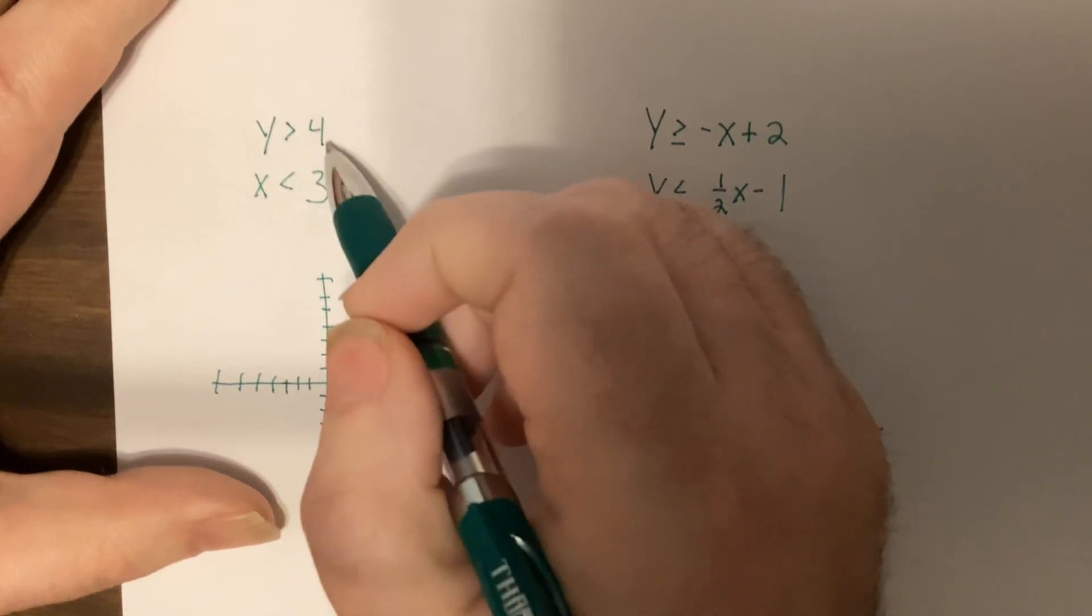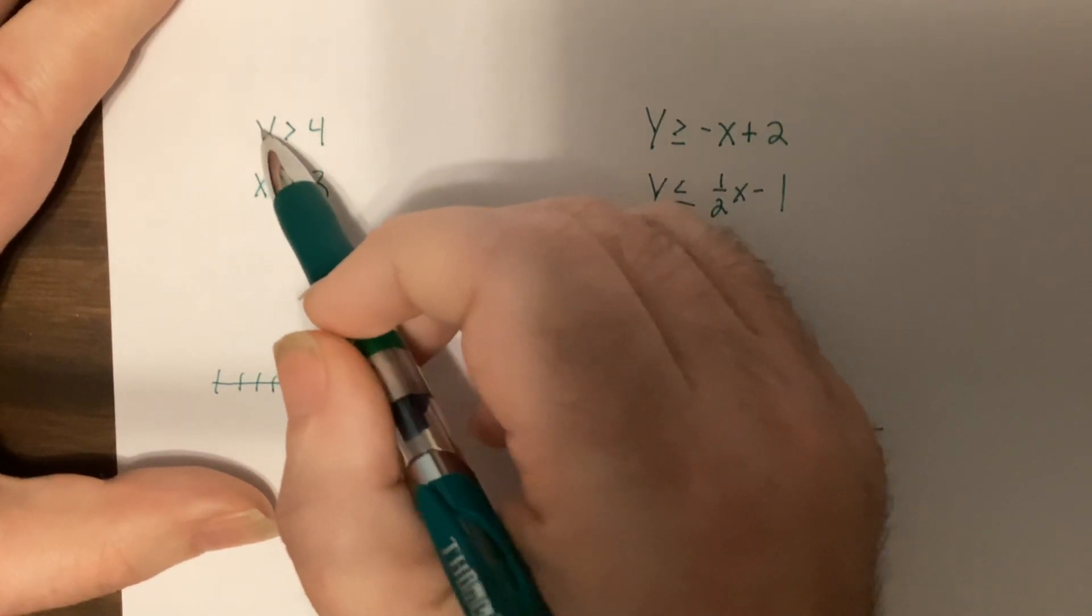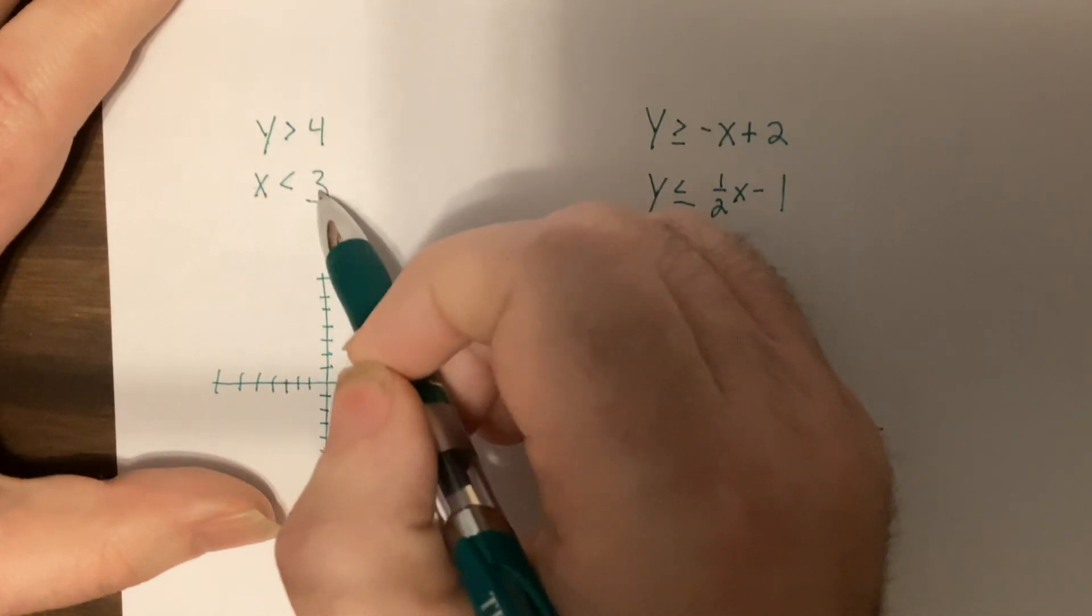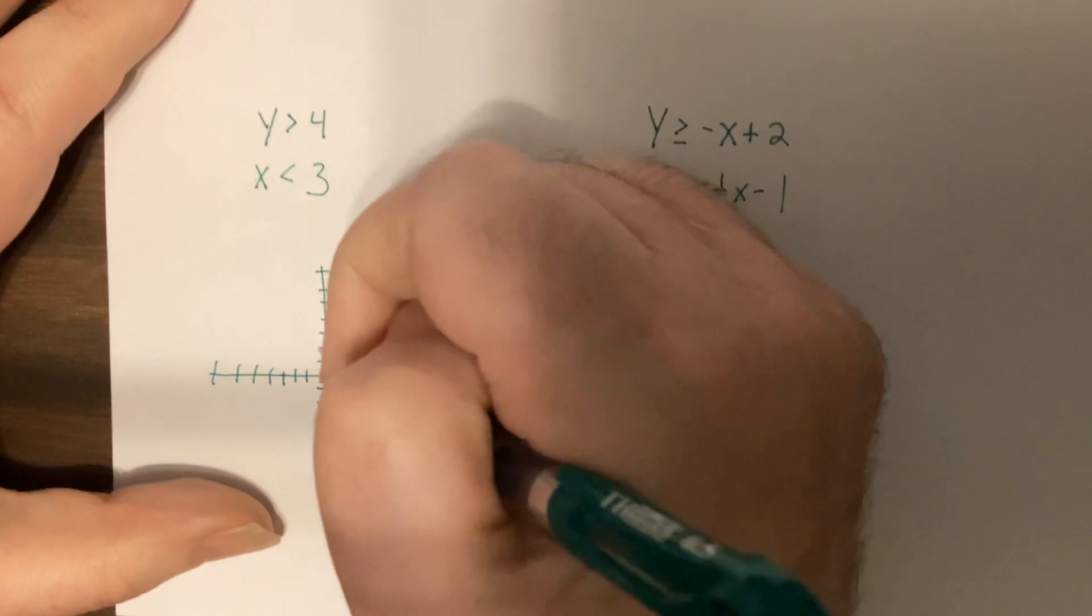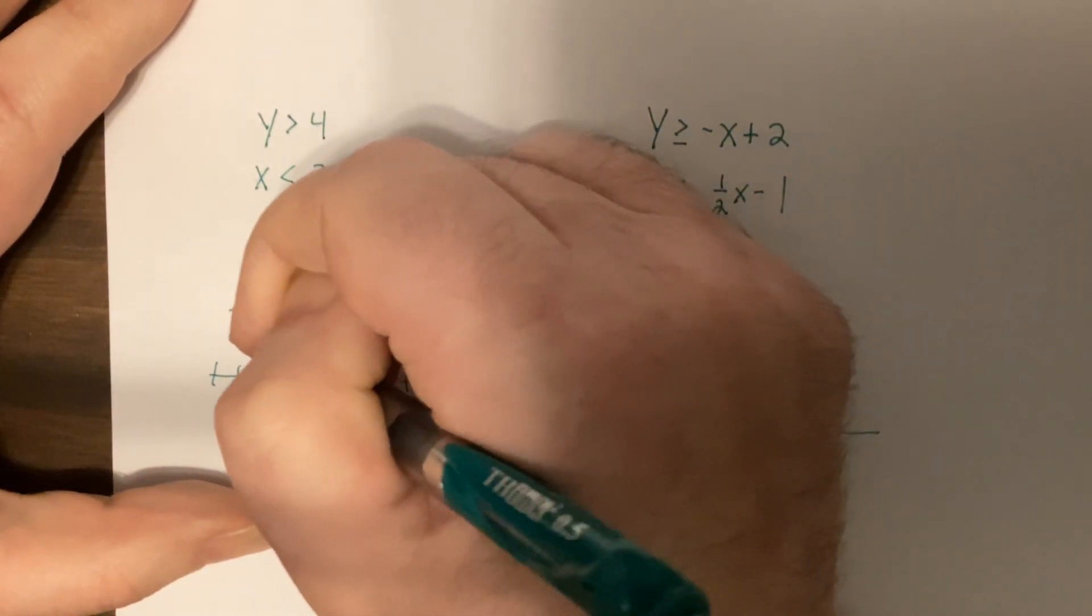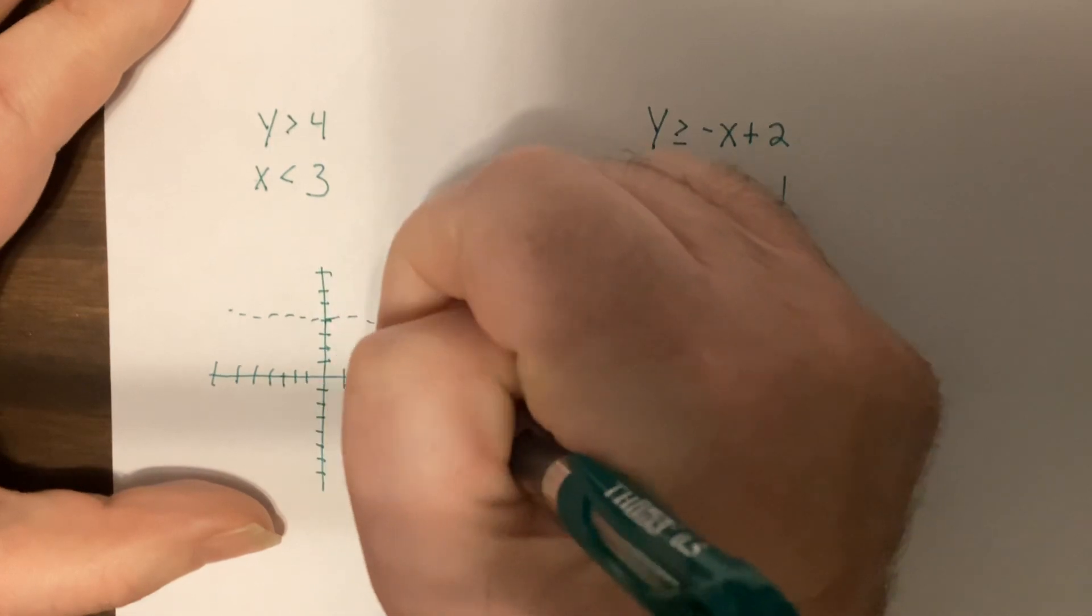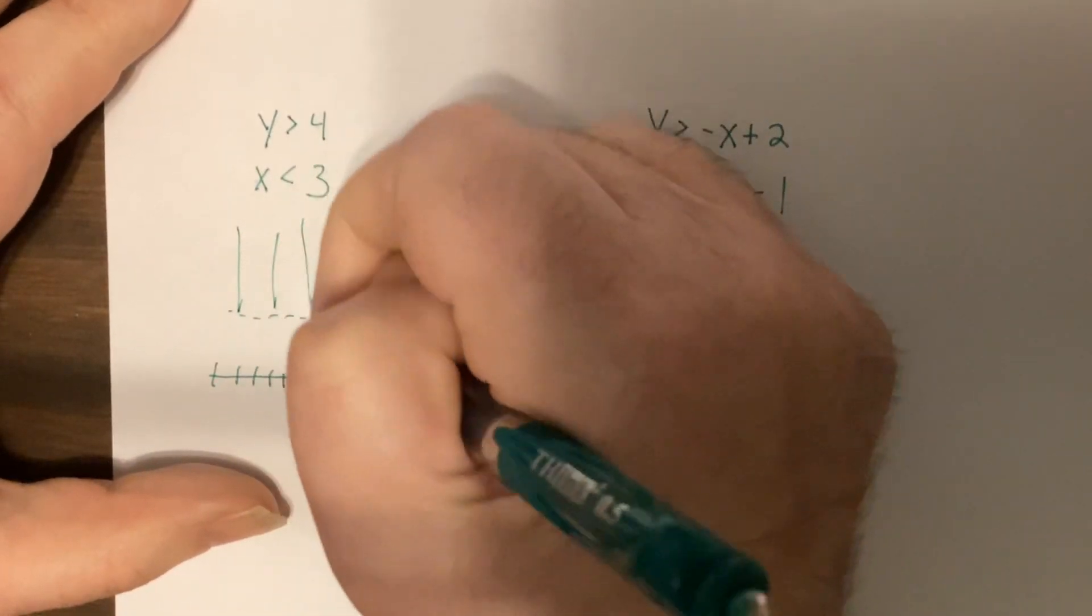Okay. Y equals a number, remember, y equals a number is horizontal line. Slope is zero. X equals the number is a vertical line. Slope is undefined. So y is greater than four. One, two, three, four. It'd be dashed because there's no equals. Greater than is above.